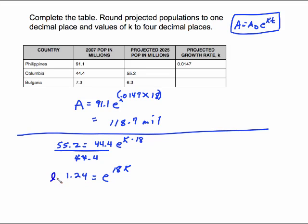Take the natural log of both sides. And this is 0.2177 equals, that cancels out, 18 K. Divide both sides by 18. And K is 0.0121. So that's what would go in our chart right here.